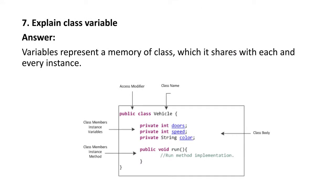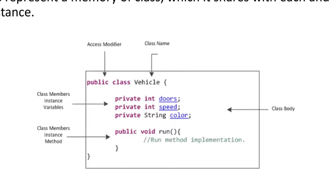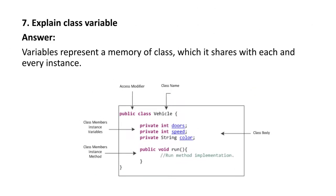Next question: explain class variable. A variable represents a memory of a class which it shares with each and every instance. For example, taking vehicle as a class with public access modifier, the instances of the vehicle — door, speed, color — are the characteristics of the vehicle. So a class variable is a memory that is shared with every instance.